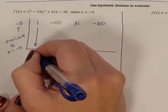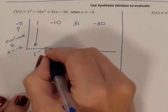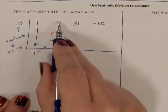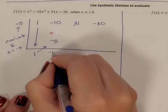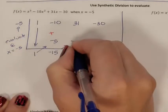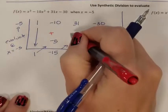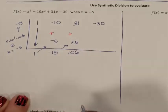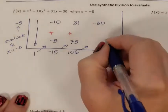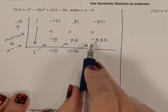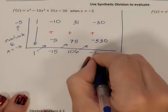You carry down the first. You multiply diagonally. So negative 5 times 1 is a negative 5. We add vertically. Negative 10 plus negative 5 is a negative 15. We multiply diagonally. Negative 5 times a negative 15 is a positive 75. We add vertically. 31 plus 75 is 106. We multiply diagonally. Negative 5 times 106 is negative 530. And we add vertically. Negative 30 plus a negative 530 is negative 560.